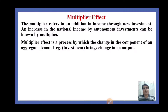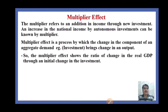The multiplier effect is a process by which the change in a component of aggregate demand — the components being consumption, investment, government expenditure, and exports — brings about a change in output. Specifically, the change in investment brings a change in output. The multiplier effect shows the ratio of change in real GDP through an initial change in investment.